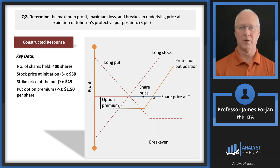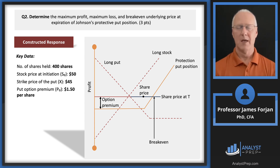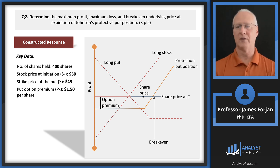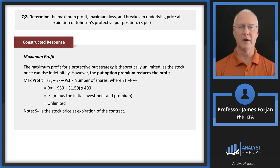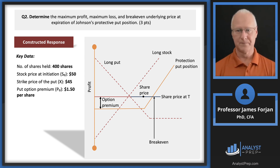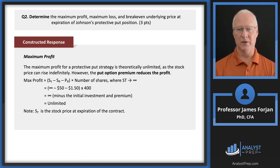How about the second question on the protective put? We have a similar graph. We're long on the stock — that dashed line going up to the right — but also long in the put option. The protective put: we win when we own the put option if stock prices fall. So we go up and hit the vertical axis, and then above the exercise price you have that guaranteed loss of the premium. If you add the two dotted lines, you get the orange combined line. So the protective put position: all you can lose is the option premium if the stock goes to infinity, and so the maximum profit is unlimited.